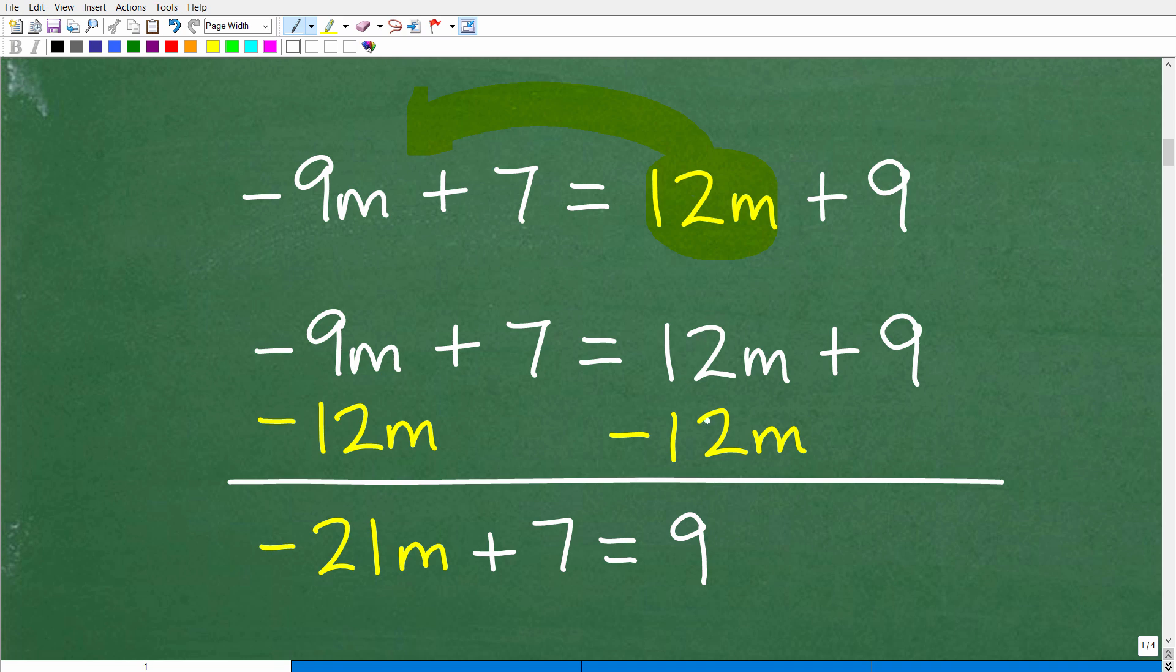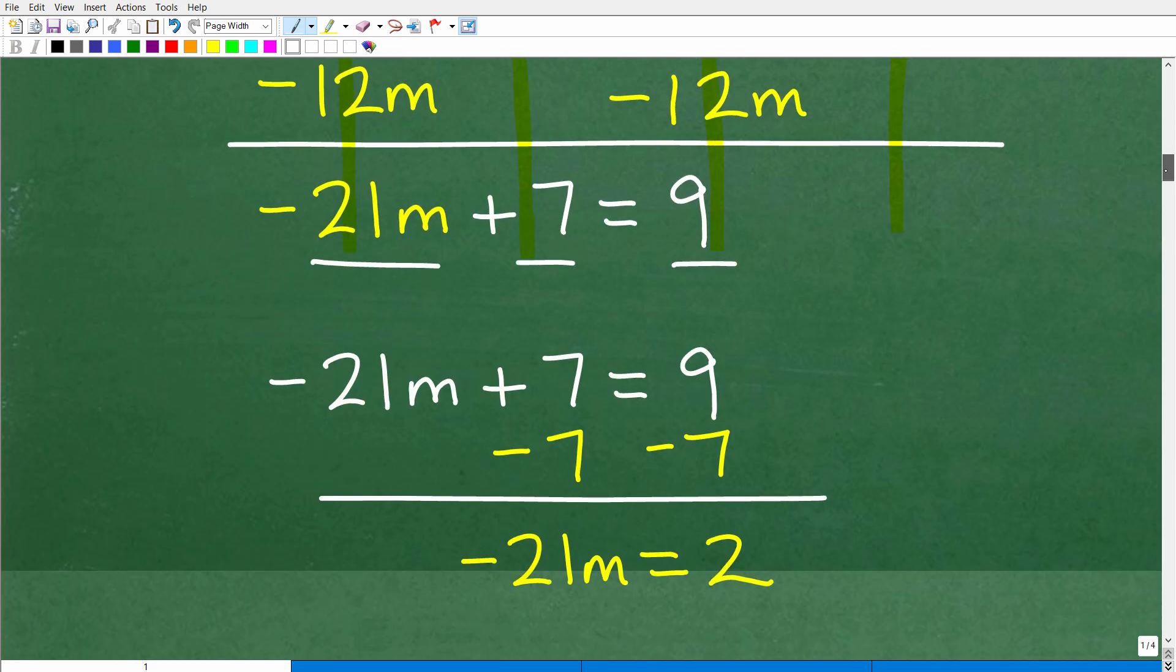Remember in algebra, whatever you do to one side of the equation, i.e. here I have a 12m on the right-hand side, I want to get rid of that 12m on the right-hand side. So how can I get rid of it? I'll just subtract a 12m away. So that's great. However, I can't just do that all by itself. I have to do things equally. That's the rule in algebra when you're solving equations. You can do whatever you want as long as you do it equally to both sides of the equation. So I'll subtract a 12m here and a 12m here. And then you're going to add down in a column manner. So what you're going to have is negative 9m plus a negative 12m. That gives me a negative 21m. 7 plus nothing is 7. 12m minus 12m is 0. So that just goes away. I don't have to write a 0. Then 9 plus nothing is 9.